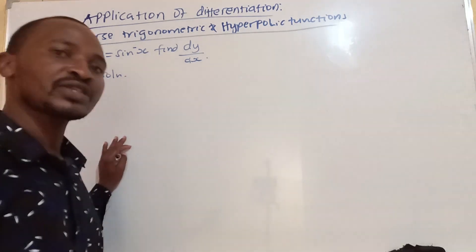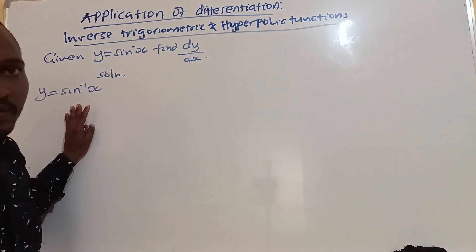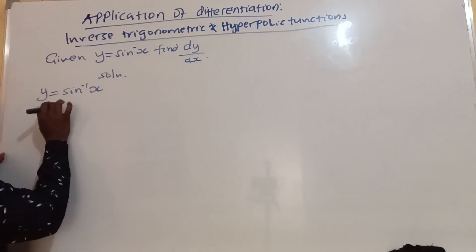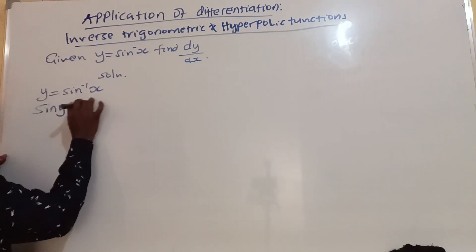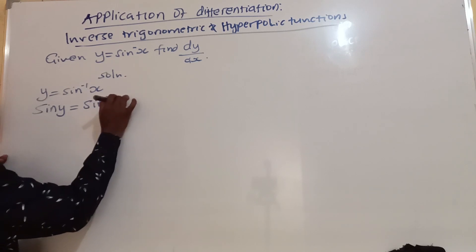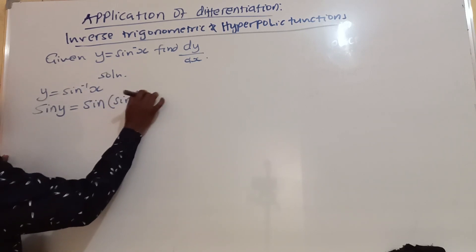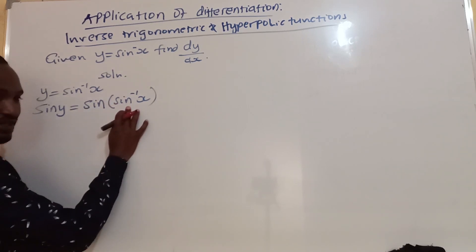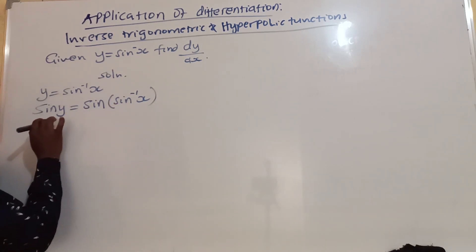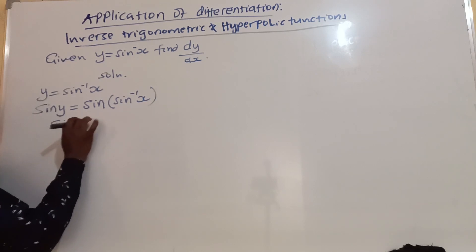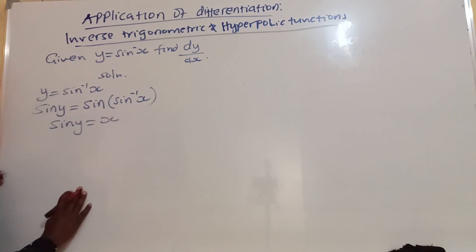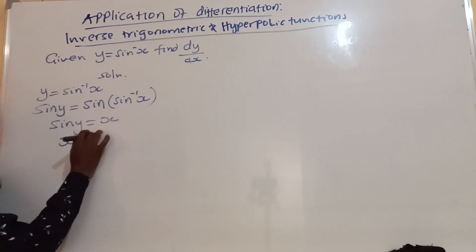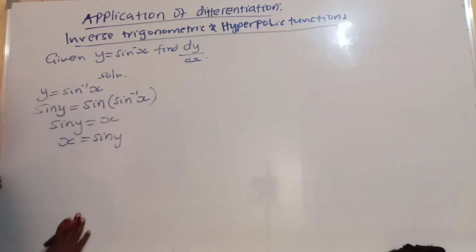We are going to apply the cancellation equation for the trigonometric function. So if we apply sine on both sides — sine y on the left side, then sine of sine inverse x on the right — the sine function cancels out the sine inverse function. So now we say sine y is equal to x. Or simply, x is equal to sine y.